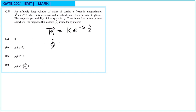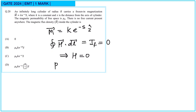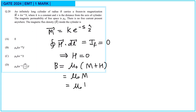Here we can use the line integral of H·dl equal to the free current, which is equal to 0. So from here we get H equal to 0, and B equal to μ₀ times (M plus H). Since H is equal to 0, this will be μ₀ into M, and M is given. So this will be μ₀ into k e raised to minus s, z cap. So option C is correct.